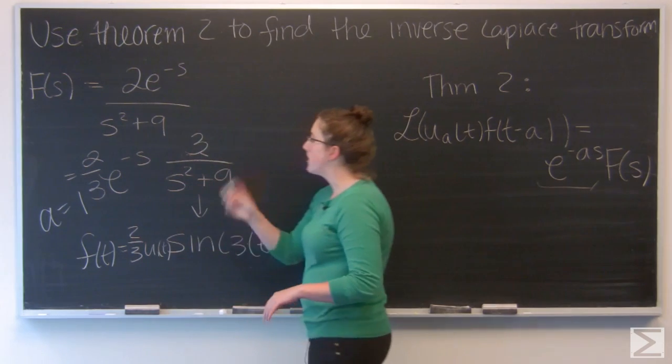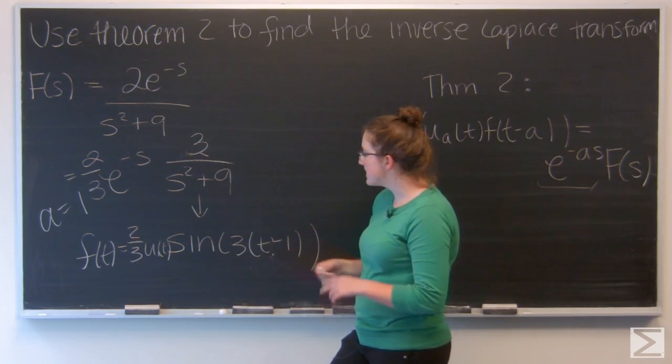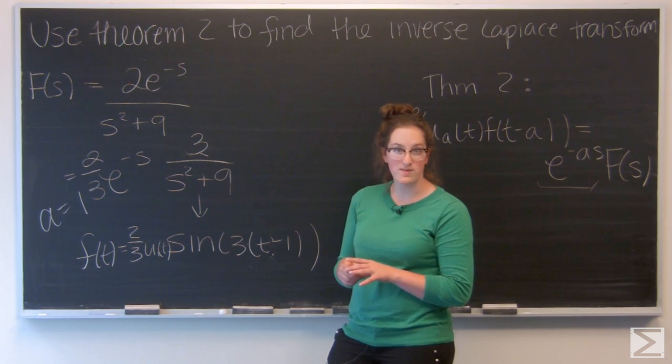So, my function is 2 thirds u sub 1 of t times sine of 3 quantity t minus 1. And we're all finished.